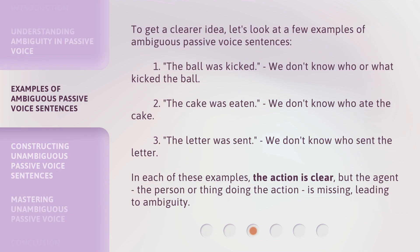To get a clearer idea, let's look at a few examples of ambiguous passive voice sentences. One: 'The ball was kicked.' We don't know who or what kicked the ball. Two: 'The cake was eaten.' We don't know who ate the cake. Three: 'The letter was sent.' We don't know who sent the letter. In each of these examples, the action is clear, but the agent — the person or thing doing the action — is missing, leading to ambiguity.